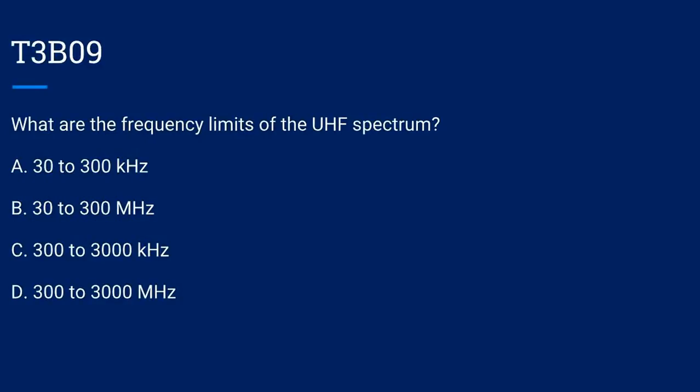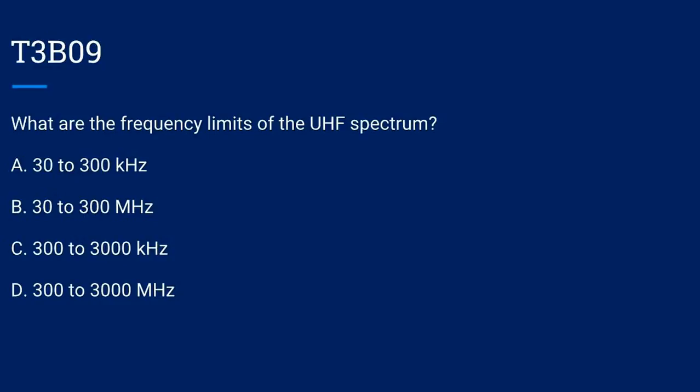T3B09. What are the frequency limits of the UHF spectrum? A. 30 to 300 kilohertz. B. 30 to 300 megahertz. C. 300 to 3000 kilohertz. D. 300 to 3000 megahertz.